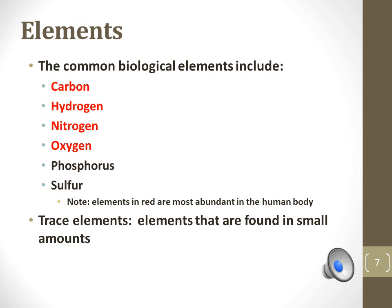Some important elements in the body are carbon, hydrogen, nitrogen, and oxygen, the most common found in the human body. These are listed in red on this slide.